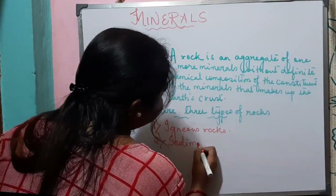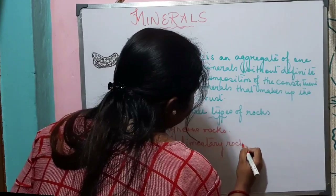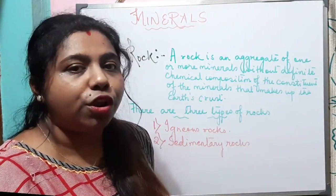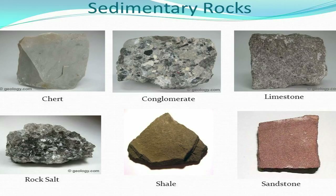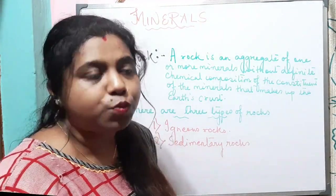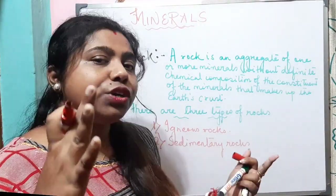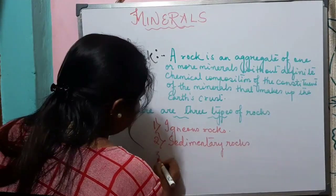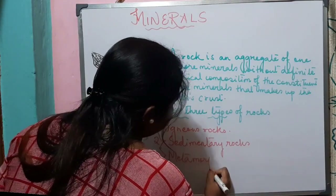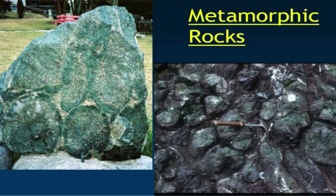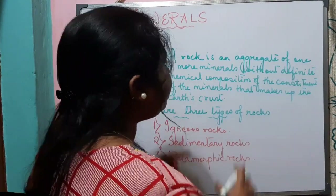Number two is sedimentary rocks. When rocks cool at the surface, smaller rocks get washed away by agents of erosion, broken into smaller pieces, deposited on ocean beds, and due to compression and pressure transform into sedimentary rocks. Number three is metamorphic rocks, where igneous and sedimentary rocks change completely into a new form under great heat and pressure.